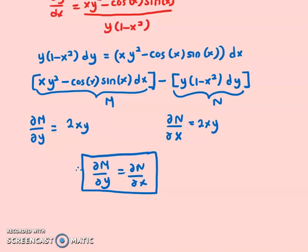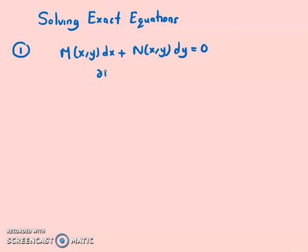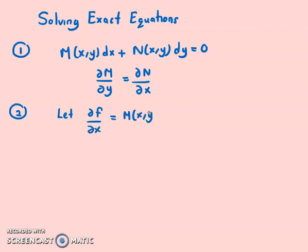Now the next part is how do we solve an exact equation. So solving exact equations — there are a few steps. Step one: make sure the equation is in the form M(x,y) dx plus N(x,y) dy equals zero, and that the equation is an exact differential. Step two: let partial f over partial x equal M. What we want to do is integrate partial f over partial x dx, which means integrating M(x,y) dx.